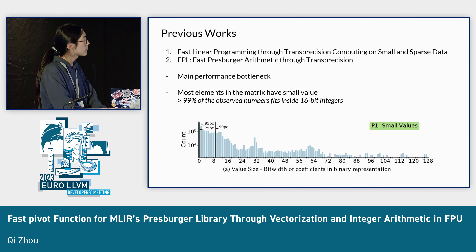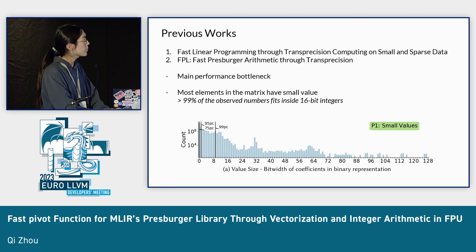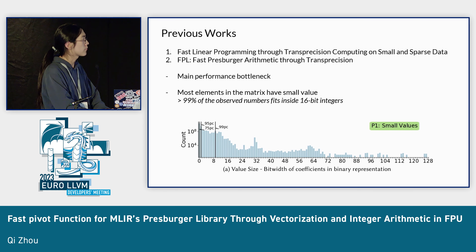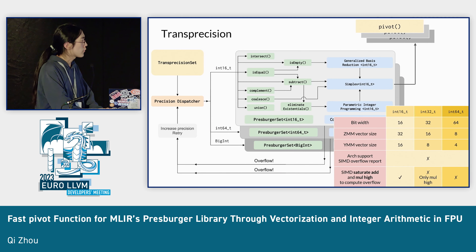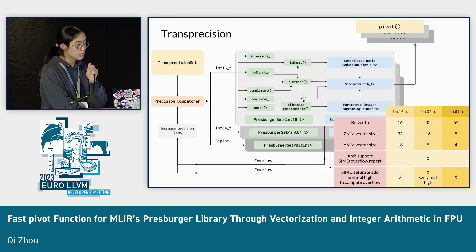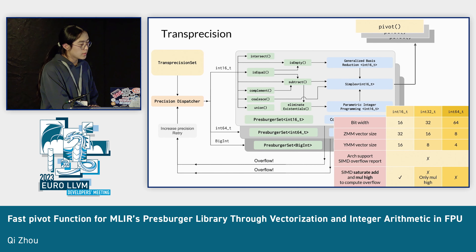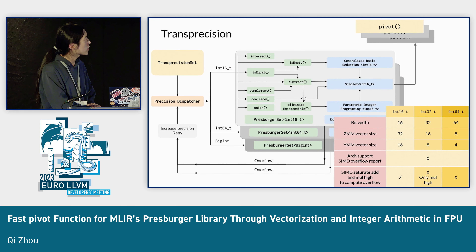The previous works — the paper 'Fast Linear Programming through Transposition Computing on Small and Sparse Data' and the FPL paper 'Fast Presburger Arithmetic through Transposition' — found that the pivot function is the main performance bottleneck of the Presburger library. It has also been discovered that most elements in the matrix have very small values, where 99% of observed numbers fit in 16-bit integers. Therefore the FPL paper presents a transposition implementation with the pivot as its core function, starting with INT16, and if overflow occurs it throws an exception captured by the transposition dispatcher.